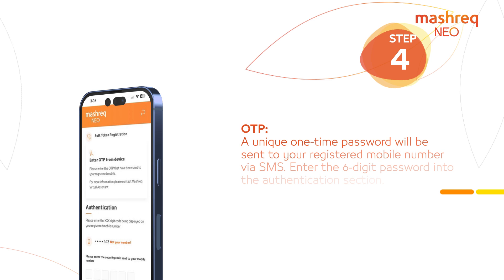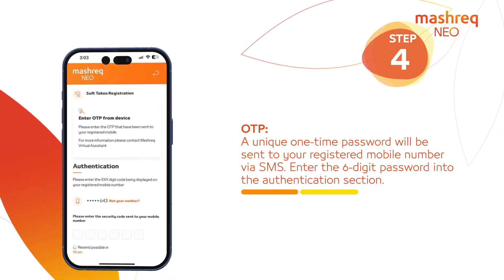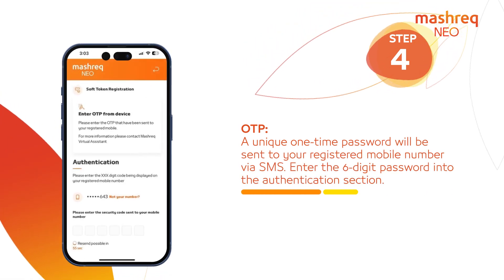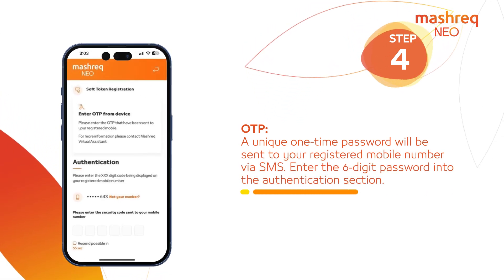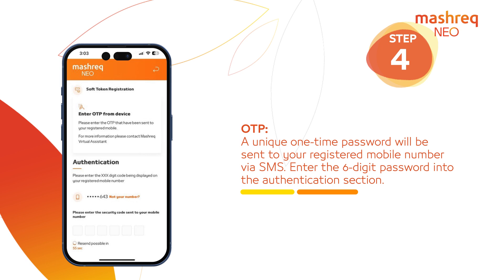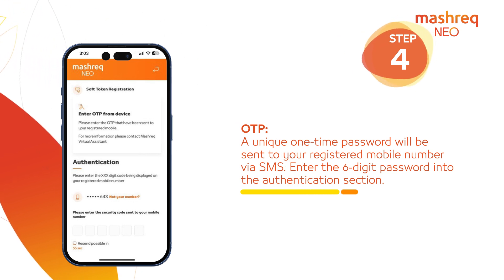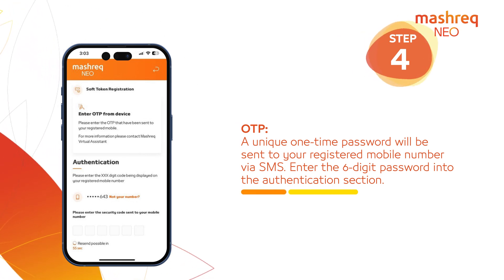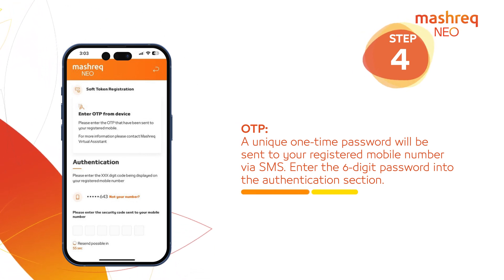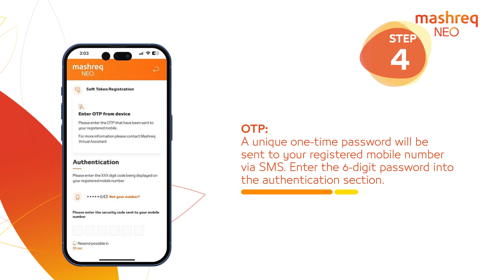Step 4: OTP. A unique one-time password will be sent to your registered mobile number via SMS. Enter the six-digit password into the Authentication section.